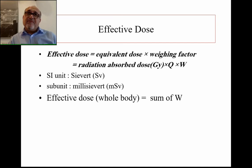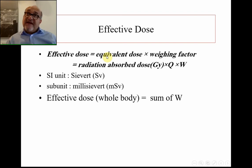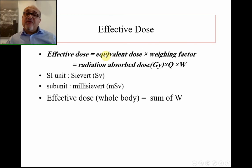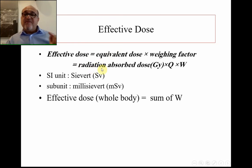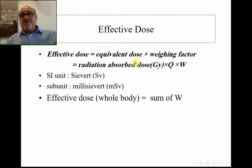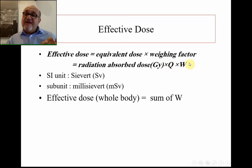To calculate the effective dose — the dose given to a tissue — we take the equivalent dose, which specifies the type of radiation, and multiply it by the weighting factor of the tissue. The equivalent dose itself comes from the radiation absorbed dose, measured in gray, multiplied by the quality factor Q to specify radiation type, then multiplied by the tissue weighting factor W to give the effective dose for that tissue.